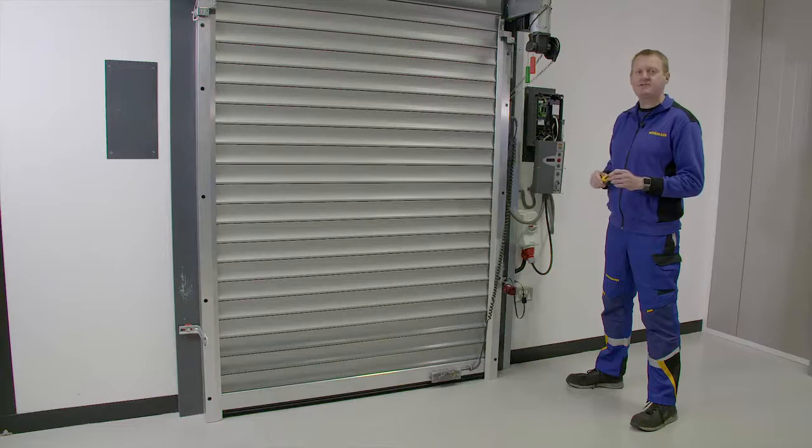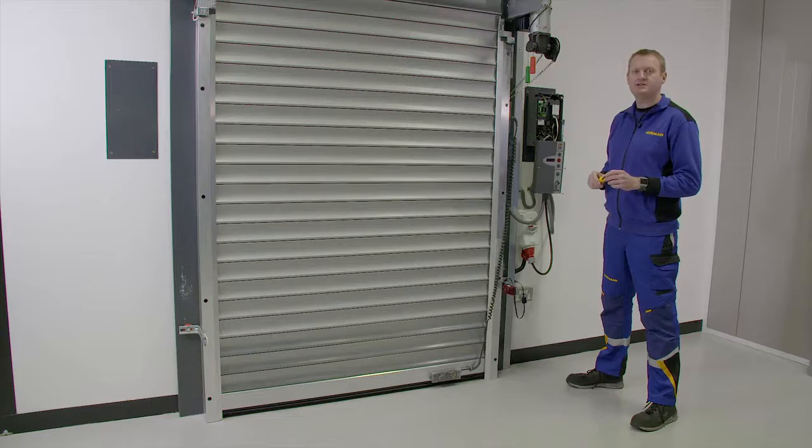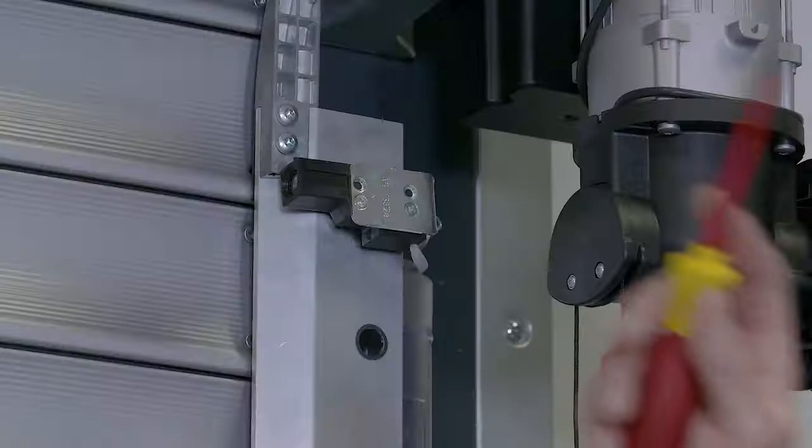This control panel looks for additional safety devices that should be fitted on certain doors. On roller shutters under two and a half meters high and on all roller grills, additional high level safety devices must be fitted.